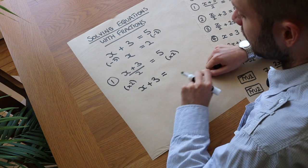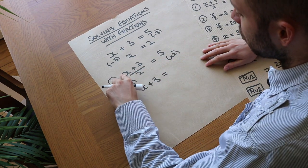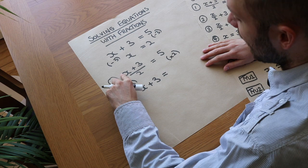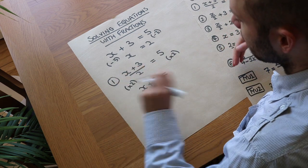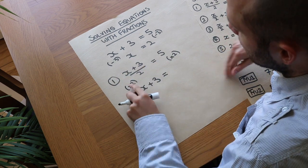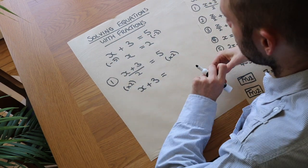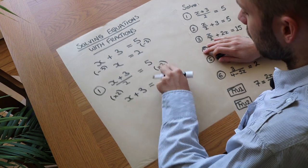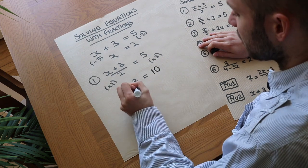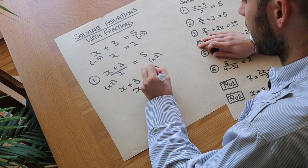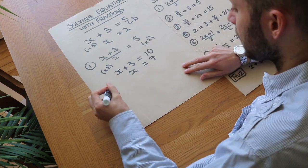A common mistake students make is that they get rid of the over 2 but then multiply the top by 2 again to get 2x plus 6 — but that means you've multiplied by 2 twice. Multiplying by 2 just gets rid of the over 2; it doesn't do anything to the numerator. The right-hand side gives us 5 times 2 equals 10, and then subtracting 3 from both sides gives x equals 7.